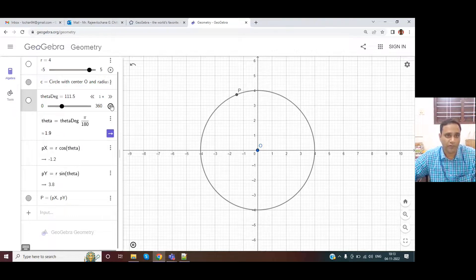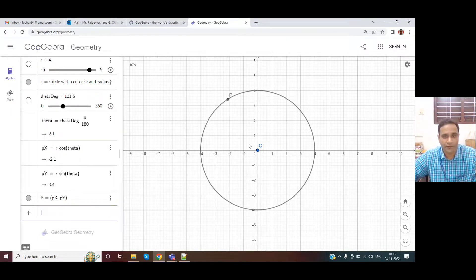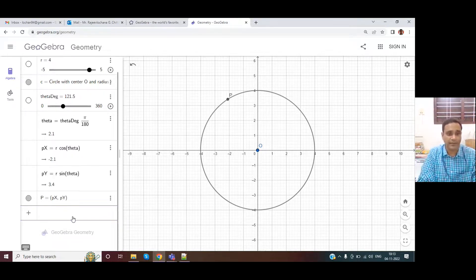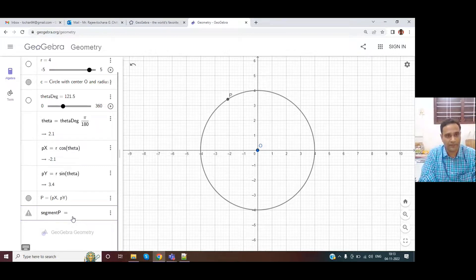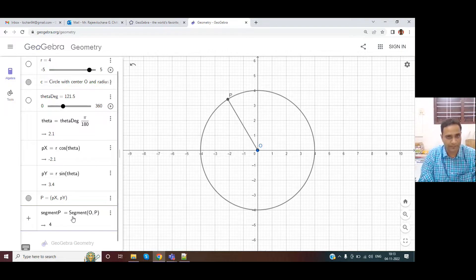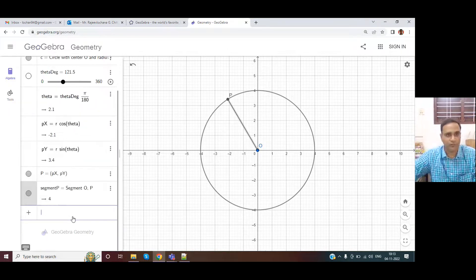So this is how we were able to get point on the circle. Now, let us pause it. If we want line between O and P or segment between O and P, I can have a segment P. So this is what we have. We have a segment.